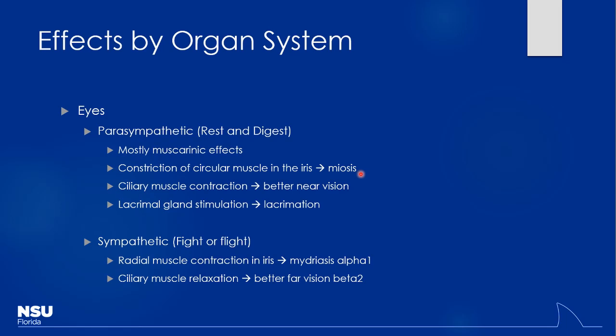In general, alpha receptors constrict smooth muscles. In the eyes, that causes mydriasis by constricting those radial smooth muscles and causing the pupil to open up. Alpha-1s cause constriction of smooth muscle, which also makes sense for blood pressure effects. Beta-2 activation typically relaxes smooth muscle. Think about beta-2 agonists like albuterol in the lungs: during an asthma attack, all that bronchial smooth muscle is constricted and you can't move air — you give albuterol, it hits those beta-2 receptors, relaxes them, and they can breathe better.